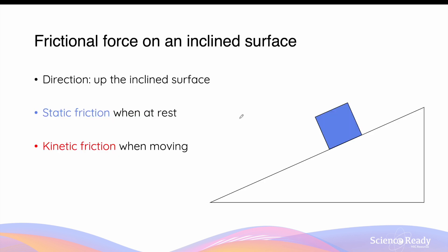As we discussed in a previous video on forces on an inclined surface without friction, we said that the weight force acts downward and the normal force acts perpendicularly away from the surface. In this scenario, the normal force does not equal the weight force. When we have an object on a surface with friction, the friction always acts up the slope.